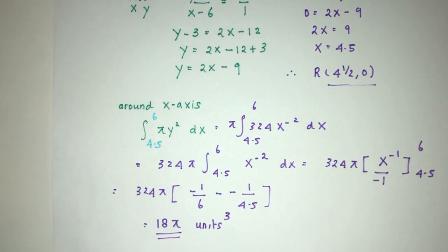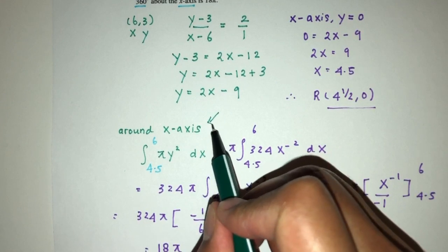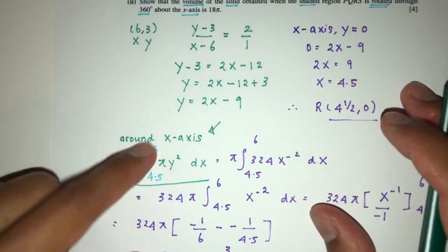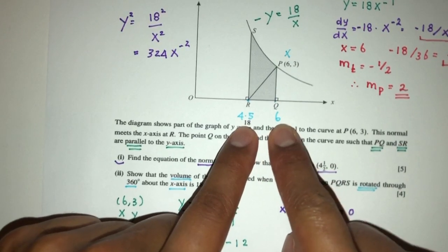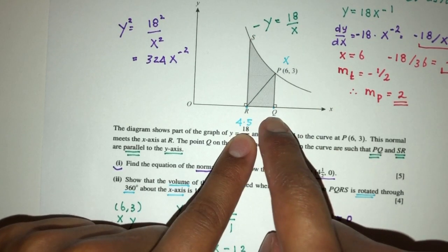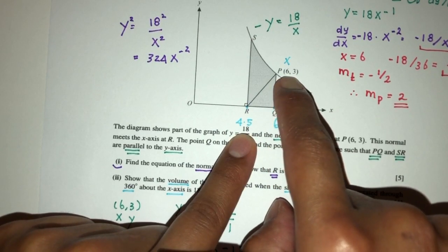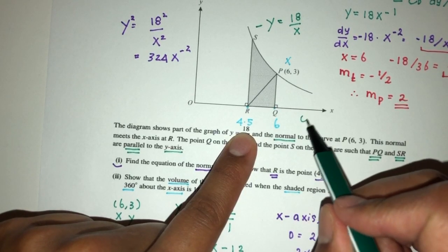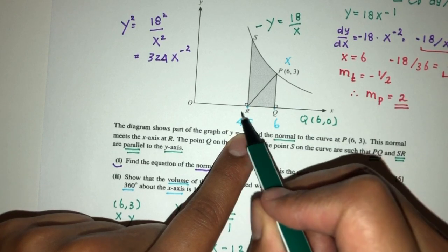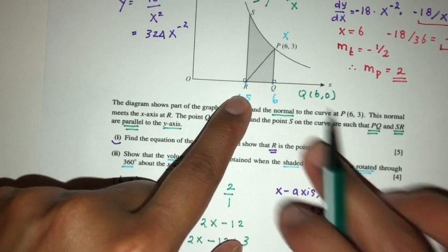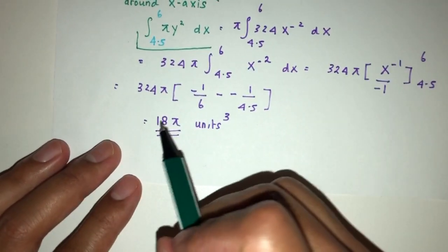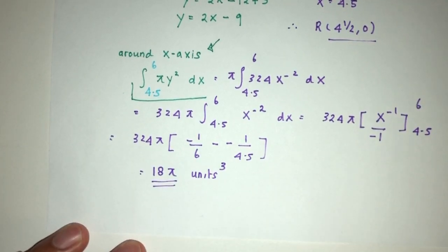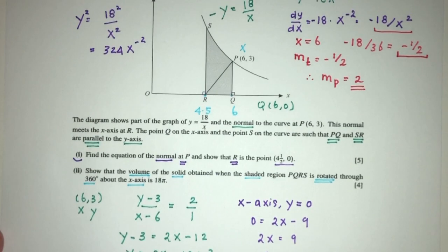As you can see, the most important part here was knowing when you rotate something about the x-axis, we have to use this formula pi y squared. Now the limits we can see clearly, we have to find those two points. Because they are vertical lines, this one we know has to be exactly below P. P has x equals 6, which means Q also has x equals 6. We found R already from part 1. Then everything else, pretty simply, we proceed step by step and solve to find the volume of the shape.